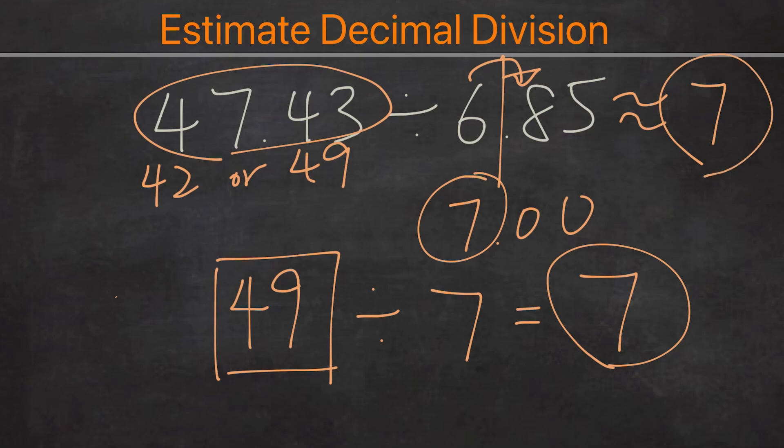So to estimate decimal divisions, we want to make sure that we round the divisor to the nearest whole number, and then try to find a compatible number in the dividend where we can divide by the divisor and it would become a whole number. And there are also possibility of two answers if the dividend is really close. You can pick two dividends and get the answer one or the other.